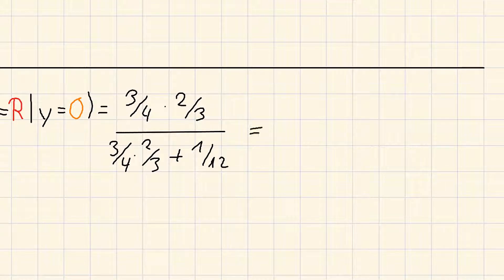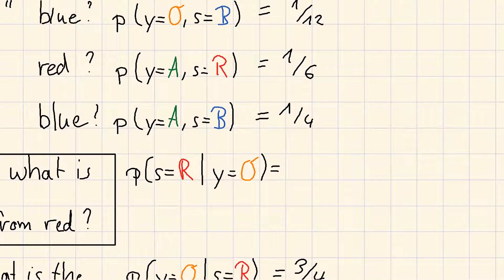And this is then equal to 6 over 7, which will be in percent 85.7%. So, what does that mean?